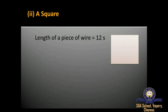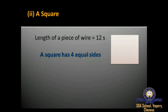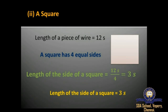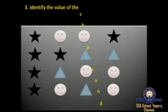Now for the square: the length of the piece of wire is 12 cm. A square has four equal sides, so to find the length of each side you divide 12 by 4. When you divide 12 by 4 the answer is 3 cm. Therefore, the length of the side of the square is 3 cm — whereas the equilateral triangle gave 4 cm because it has three equal sides.